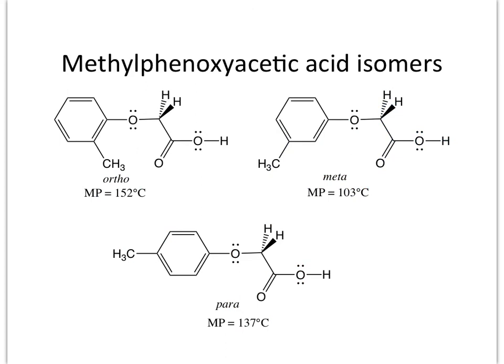Looking at the potential isomers of our product, the products have fairly distinct melting points. If it's ortho, it has a fairly high melting point of 152°C. If it's meta, it has a low melting point of 103°C. And if it's para, it has an intermediate melting point of 137°C. All of these are easily within our melting point range, and we can use that to identify which starting material we had.